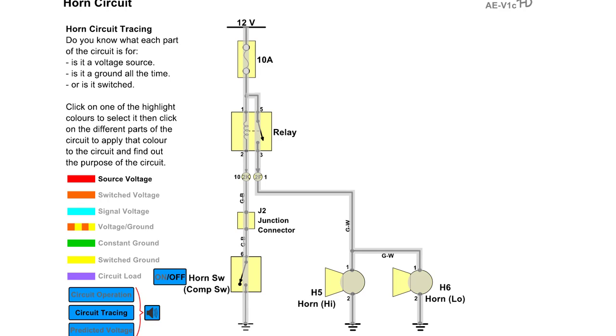Circuit tracing is an activity that instructors often use to get students to understand where in the circuit voltage can be measured. In this example, students would electronically color the circuit in very much the same way they would with markers or pencil in class.